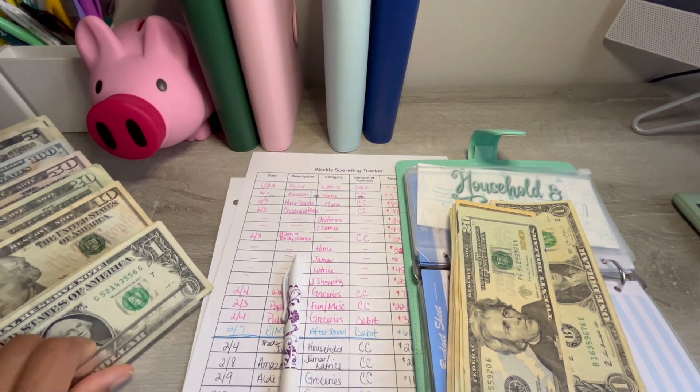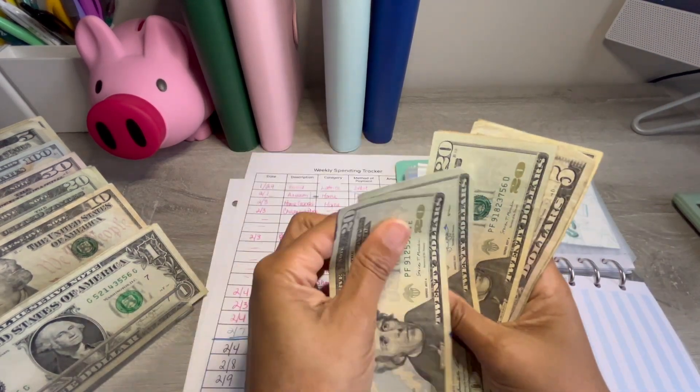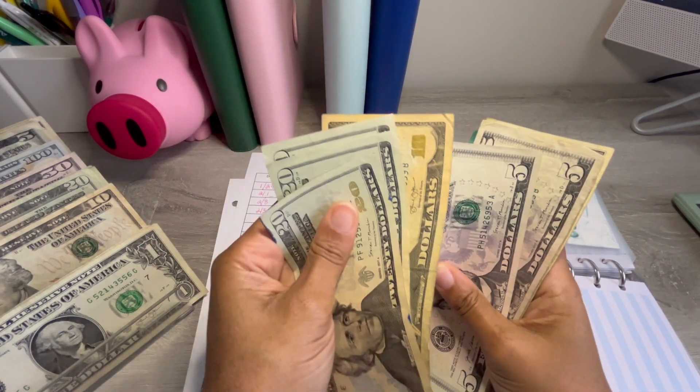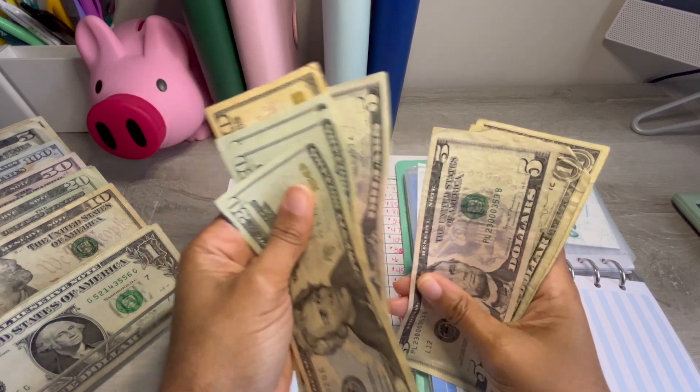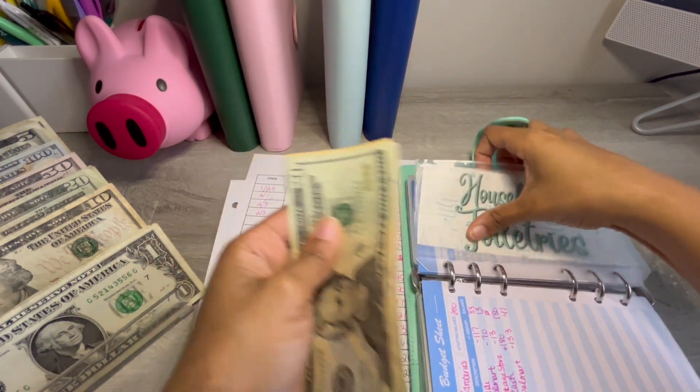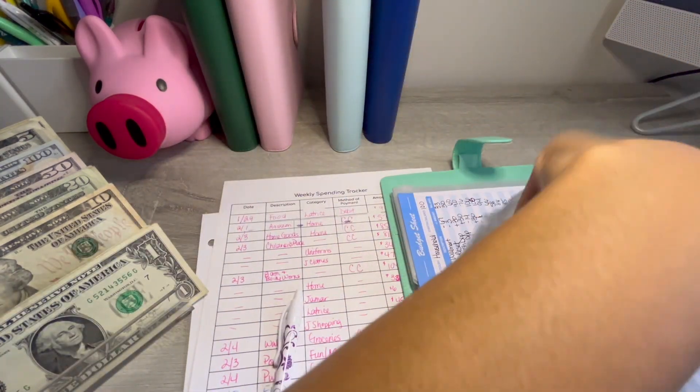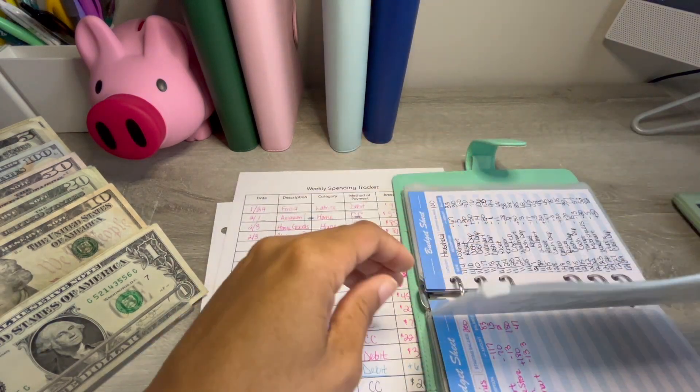So let's put this over here. Make sure it's in the frame so you guys can see it. And now in household, we have $20, $40, $60, $70, $75, $80, $81, $82. Let's make sure it's in the frame and it's right. Yep. So that's household.